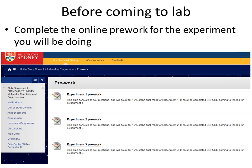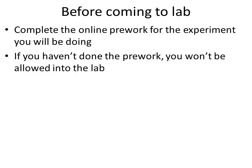Before you come to the lab you must complete online pre-work for the experiment that you will be doing. This pre-work counts 10% of the experimental mark for that week. The pre-work is very easy — it consists of five multiple choice questions and most of the answers can be found in the lab manual. But the pre-work is essential: if you have not completed the pre-work you will not be allowed to enter the lab and you will get a mark of zero for that week. The pre-work is designed to make sure you have read the lab before you come and to cover any important safety issues.